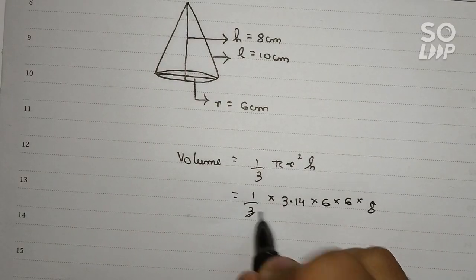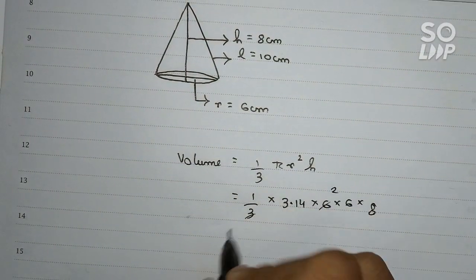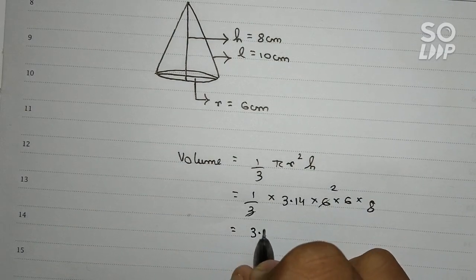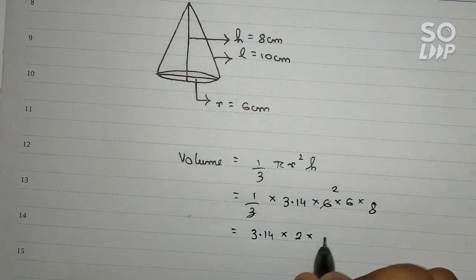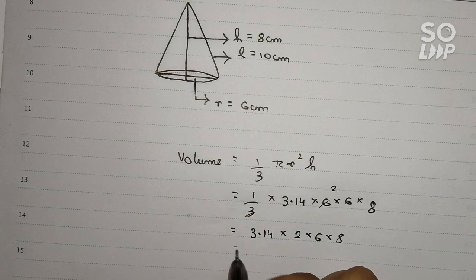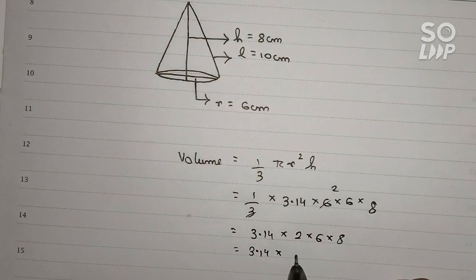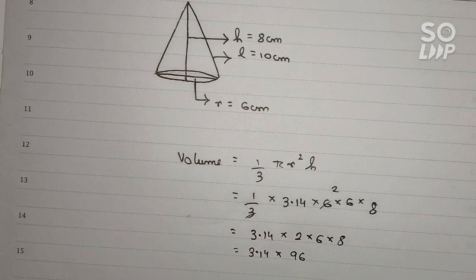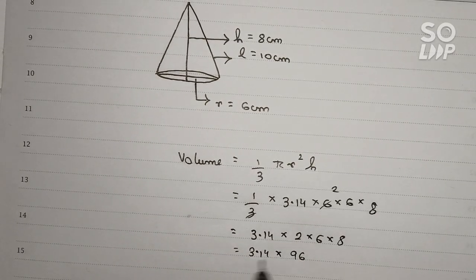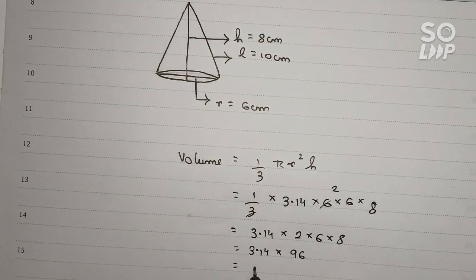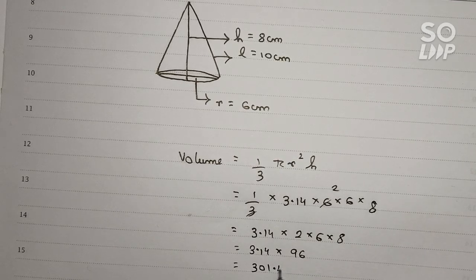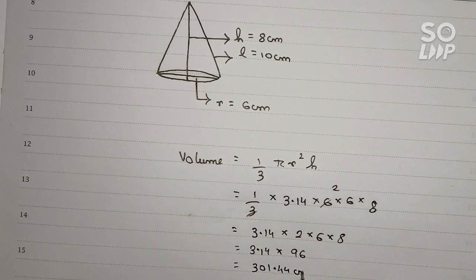So 3 and 6 we cut, it becomes 2. So it becomes 3.14 × 2 × 6 × 8. So if we do it, it becomes 96. Now if we multiply 3.14 × 96 we get 301.44 centimeter cube.